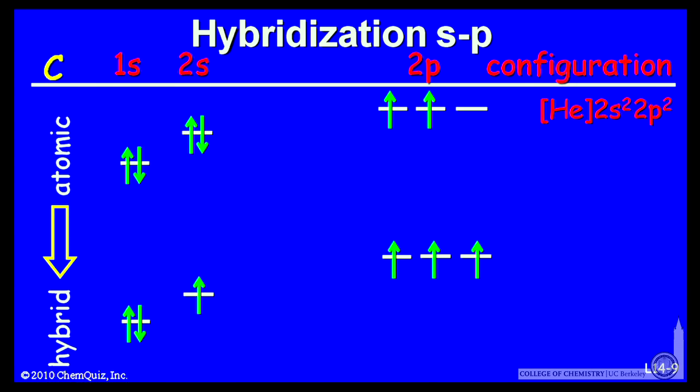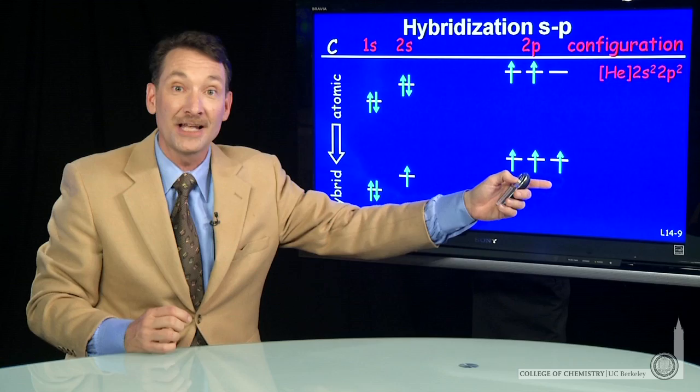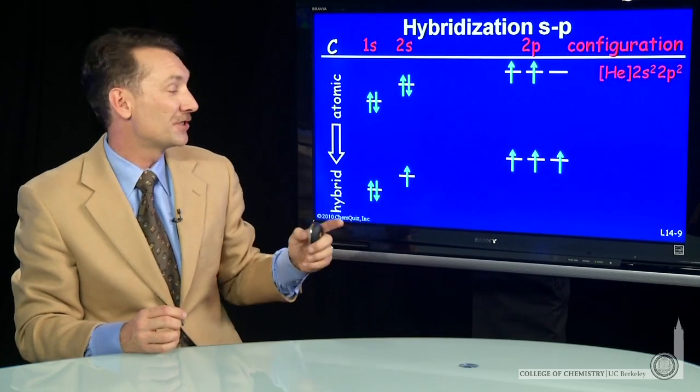Atomic to hybrid orbitals. Here's carbon with its ground state 1s2, 2s2, 2p2 configuration. I'm going to spread out the electrons for my hybridization process.